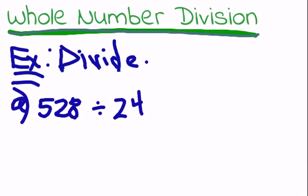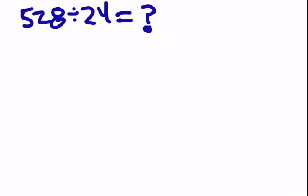Example A: the directions read to divide. So we have 528 divided by 24. In the current format it's not very useful. We can change this up a little bit to long division and it'll be a lot nicer for us to do by hand.